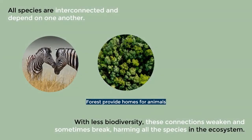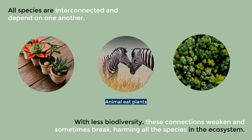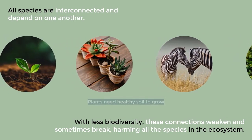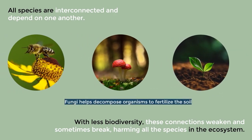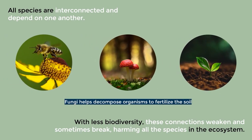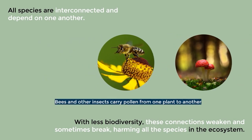All species are interconnected — they depend on one another. Forests provide homes for animals. Animals eat plants. The plants need healthy soil to grow. Fungi help decompose organisms to fertilize the soil. Bees and other insects carry pollen from one plant to another, which enables the plants to reproduce. With less biodiversity, these connections weaken and sometimes break, harming all the species in the ecosystem.